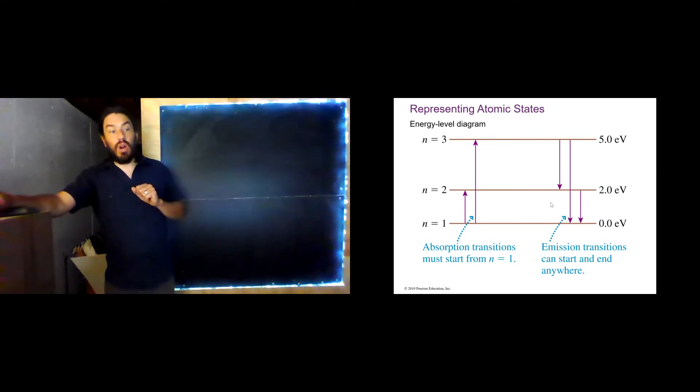However, for emission, it can start anywhere. So an atom could get excited into the n equals 3 state, and then it might transition to the n equals 2 state, and then release another photon to get to the n equals 1 state. So this helps us understand why the absorption spectrum has so many fewer lines than the emission spectrum does.